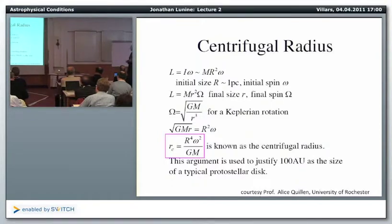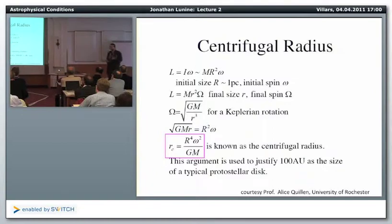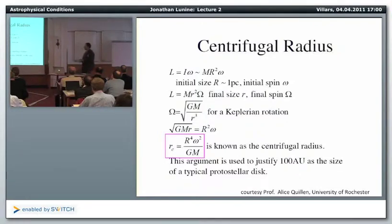Observational evidence suggests a good fraction of stars — maybe half of low-mass stars — end up with disks at least transiently. Not all do; others produce binary star systems where angular momentum is too large for a stable disk. But clearly in many cases one ends up, at least for a short time, with a gaseous disk that feeds the central star and can potentially produce planets.